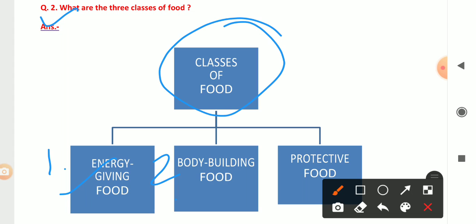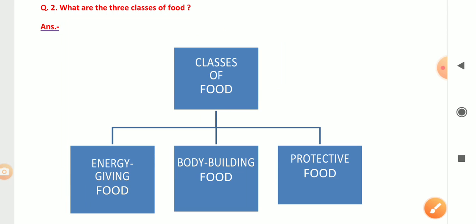Number two is body building food, which includes pulses, gram, egg, milk, which gives us protein. Number three is protective food, which includes vegetables and fruits. So these are the three categories of food: energy giving food, body building food, and protective food.